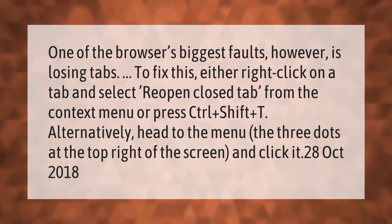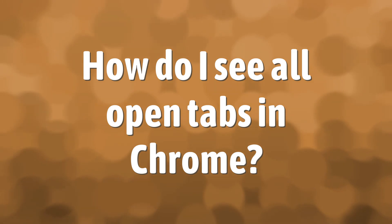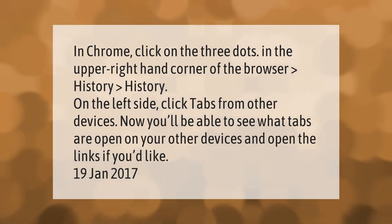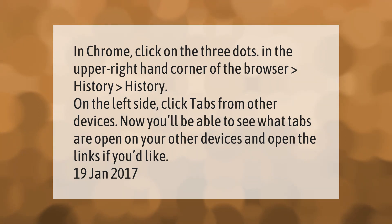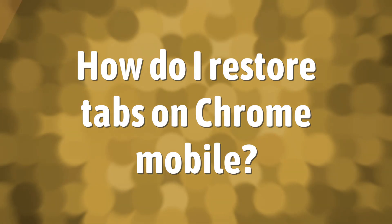Alternatively, head to the menu — the three dots at the top right of the screen — and click it. In Chrome, click the three dots in the upper right-hand corner, go to History > History, then on the left side click 'Tabs from other devices.' You'll be able to see what tabs are open on your other devices and open the links if you'd like.